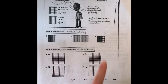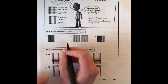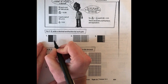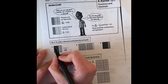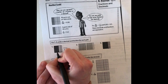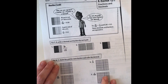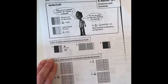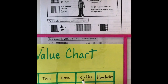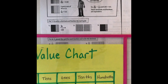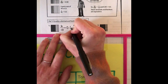The directions say for numbers 1 through 3, write a decimal and fraction for each grid. For number one, we'll create our fraction by looking at the parts — the parts are either going to be 10 or 100. Here we have 10, so 10 is our denominator. The parts that are filled in are 1, 2, 3, 4, 5, 6 — six parts filled in, which represents six tenths. Using my place value chart, I know the six needs to be in the tenths spot, and we put a zero in the ones place because there are no ones. So my decimal is 0.6.